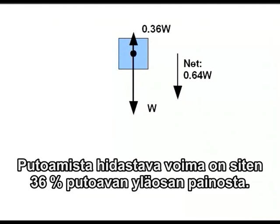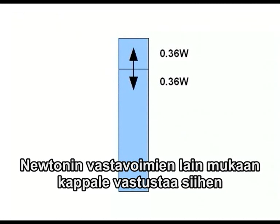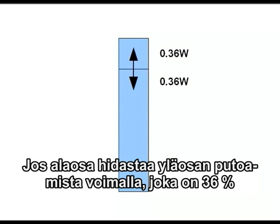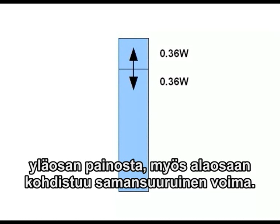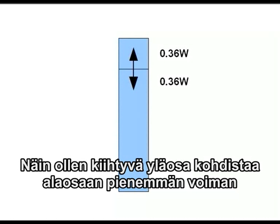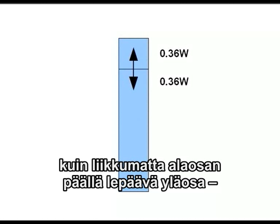In other words, once it starts falling, the upward resistive force is only 36% of the weight of the falling section of the building. Newton's Third Law says interactions between objects work both ways — the forces two objects exert on each other are always equal and opposite. So the downward force exerted by the falling block is exactly 36% of the weight of the falling block, meaning the top section is exerting less force on the lower, stronger, undamaged structure than it would if simply sitting motionless.